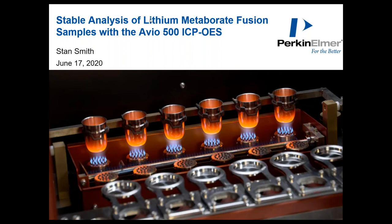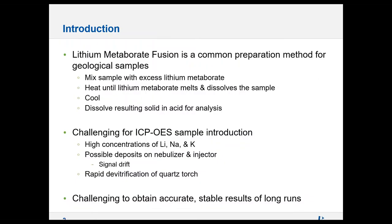We'll briefly go over what makes fusion samples so challenging, what we did to overcome these challenges, and show you data to demonstrate how well the solutions worked. Fusion fluxes are a common approach to preparing geological samples such as rocks and ore samples. There are a variety of flux materials including peroxides, pyrosulfates, and meta- or tetraborates. In this work, the customer had developed a lithium metaborate flux matrix. Essentially, the crushed ore sample is added to lithium metaborate in a platinum crucible and heated to melt the salt and dissolve the ore. The molten flux is cooled back to a solid, which can then be dissolved in dilute acid.